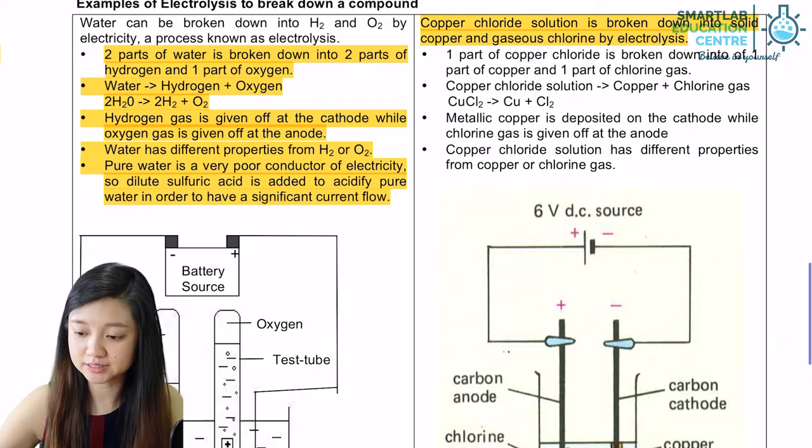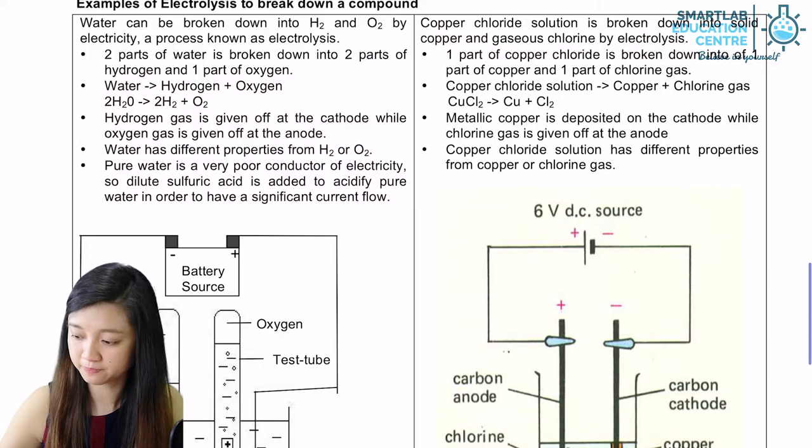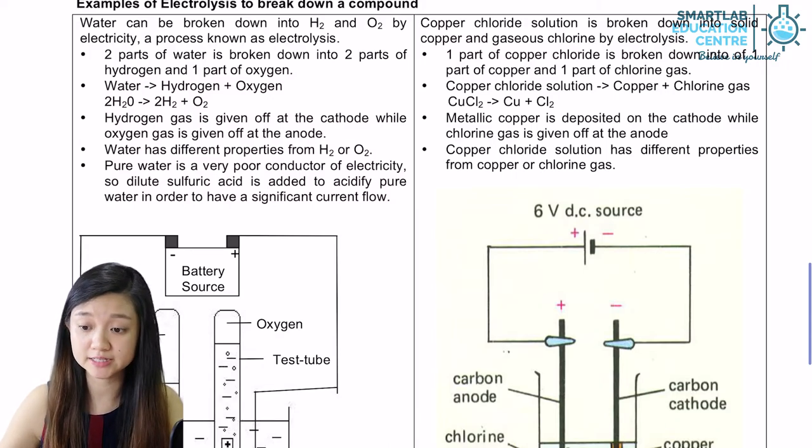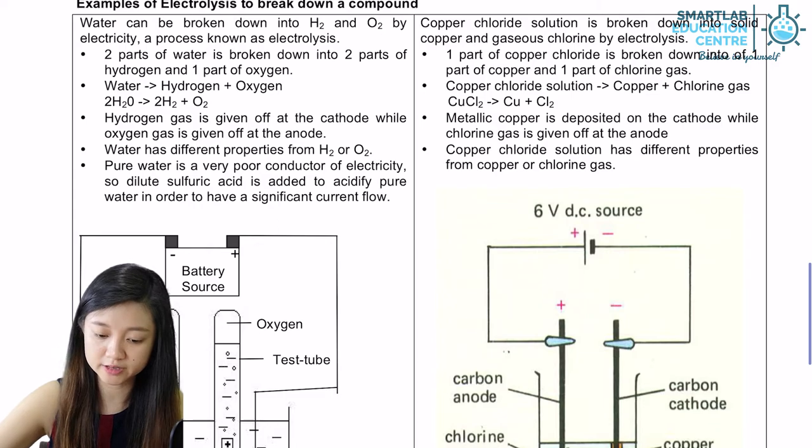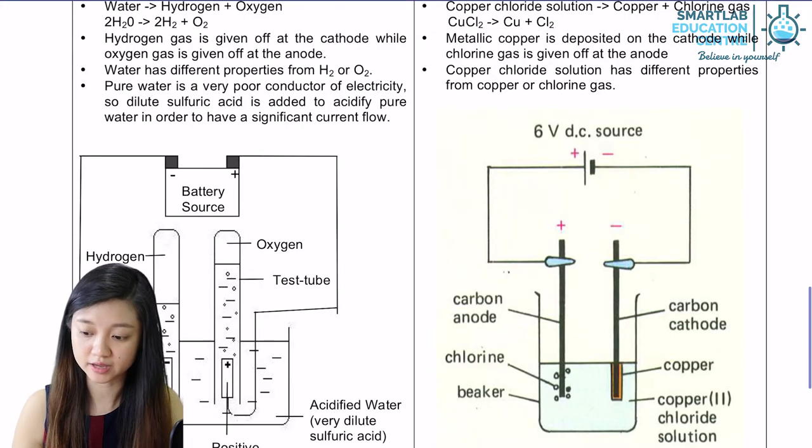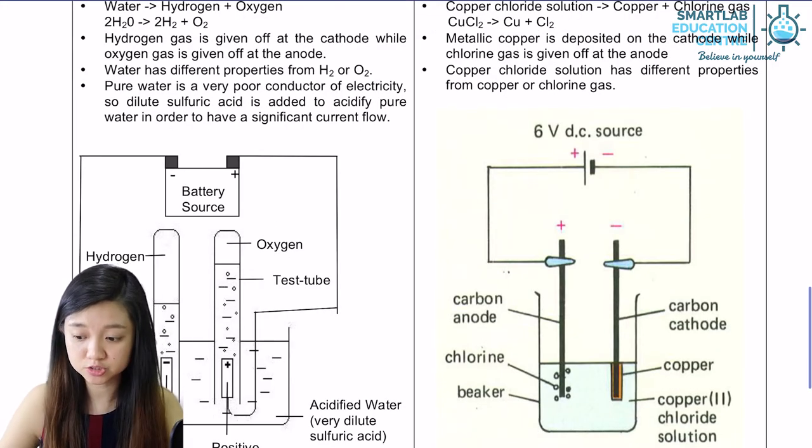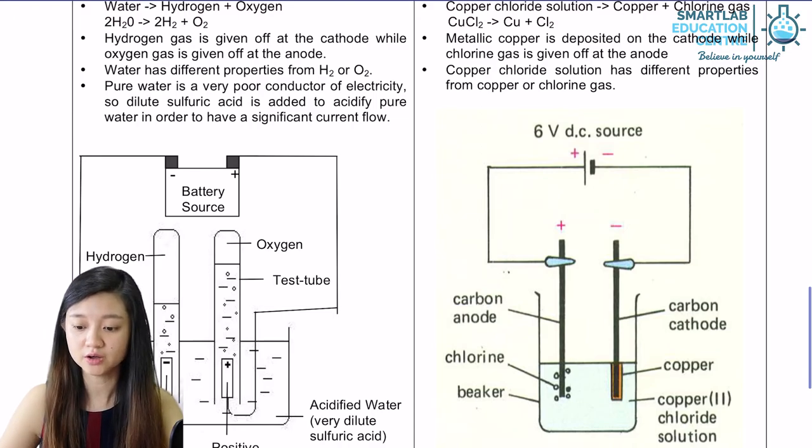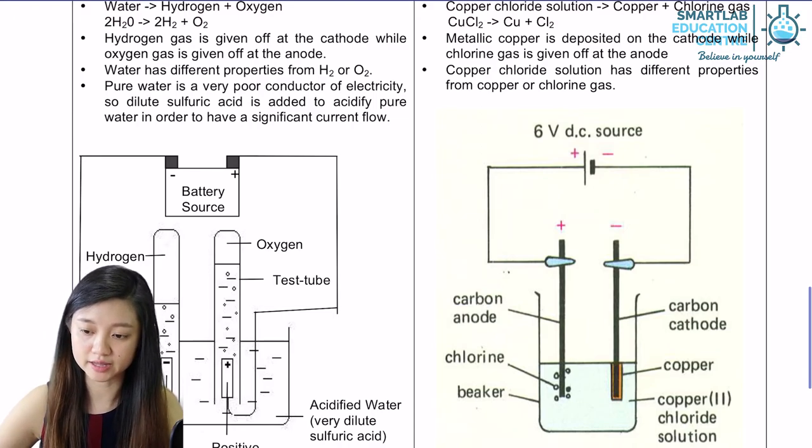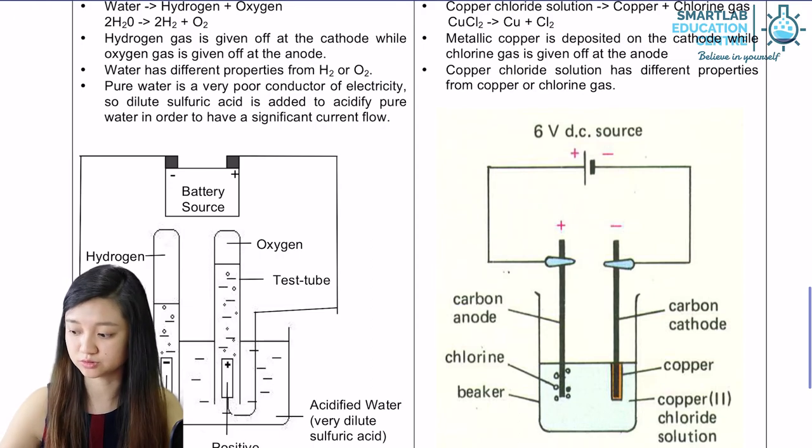Let's look at the other setup. The compound to be broken down in this case will be copper chloride. As electric current passes through copper chloride solution, we get chlorine at the anode as well as copper at the cathode.